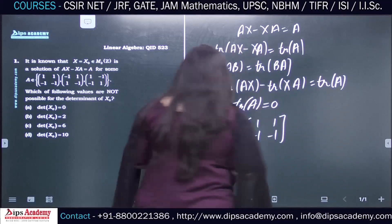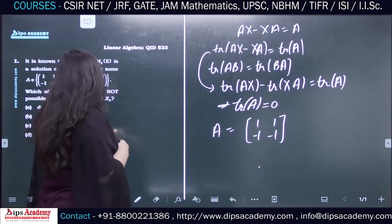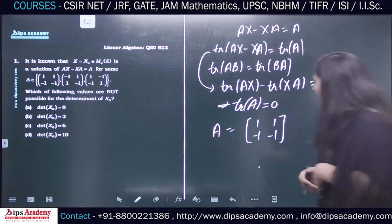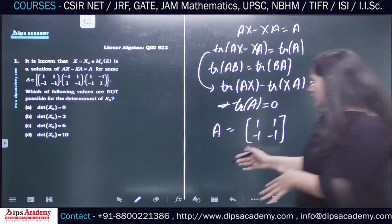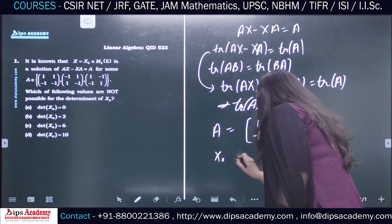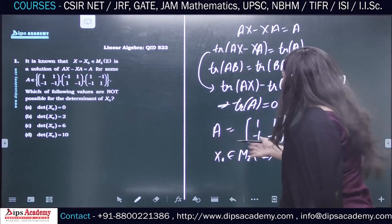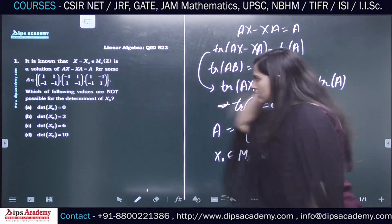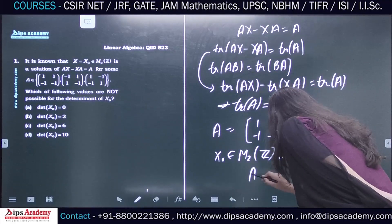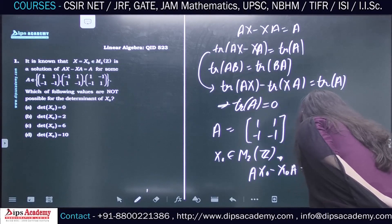So our required matrix A is [[1, 1], [-1, -1]]. This is the matrix for which we have to find X₀. The ultimate task is to find the determinant of X₀ — specifically, to find which values are not possible for det(X₀). Since X₀ is a solution, it must satisfy AX₀ minus X₀A equals 2A.